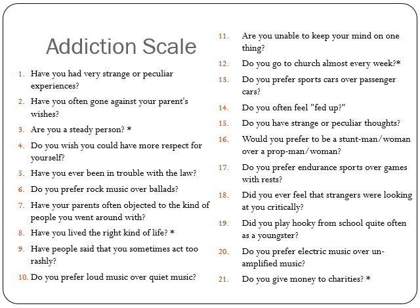The addiction scale is interesting — it attempts to predict who's likely to become addicted, looking not just at traits linked to addiction but at broader characteristics including a person's situation. It's geared for identifying kids in school who might be prone to addiction, with the idea that we could then engage in preventive behaviors. Sample questions include: 'Have you had very strange or peculiar experiences?' and 'Have you often gone against your parents' wishes?' — people who become addicted tend to answer these in the same way.